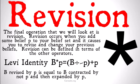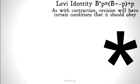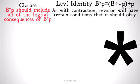Now, on to revision itself. Revision occurs when you add some belief P to your belief set and it causes you to revise and change your previous beliefs because there's a contradiction with that belief somewhere in your belief set. Revision can be defined in terms of our other operators via something known as the Levi identity: B revised by P is equal to B contracted by not-P, plus P. As with contraction, revision will have certain conditions it should obey. Closure: it needs to be a belief set — logically closed, with no propositions that are a logical consequence of anything in B revised by P excluded from B revised by P. Success: B revised by P should include P, since that was the whole point.